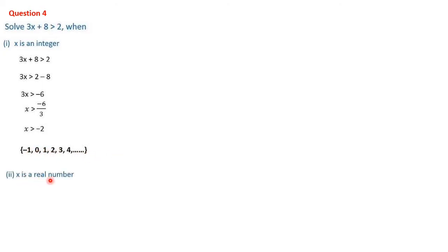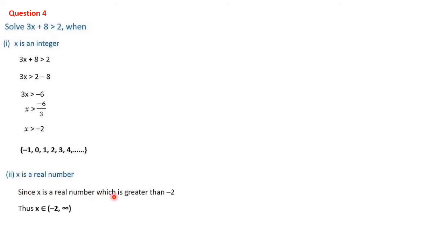When x is a real number: since x includes all rational and irrational numbers and x > -2, the solution is an open interval from -2 to infinity: x ∈ (-2, ∞). Both brackets are open.